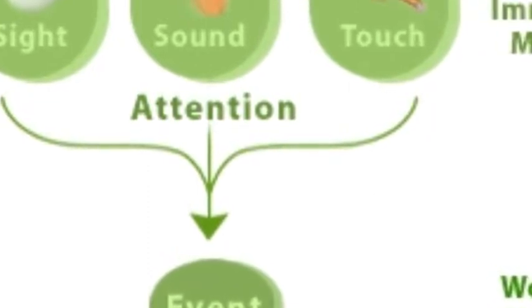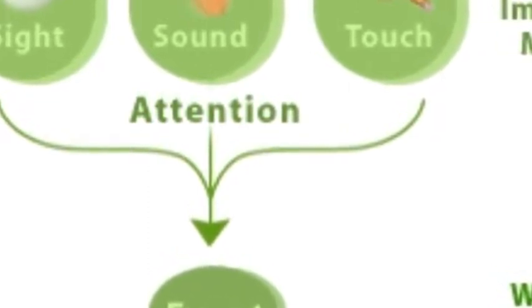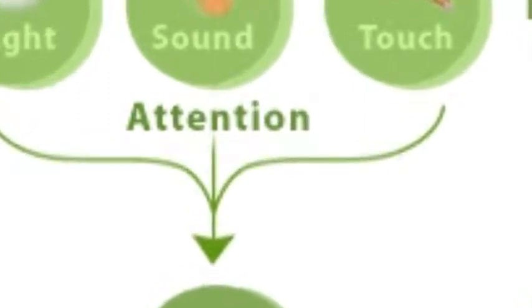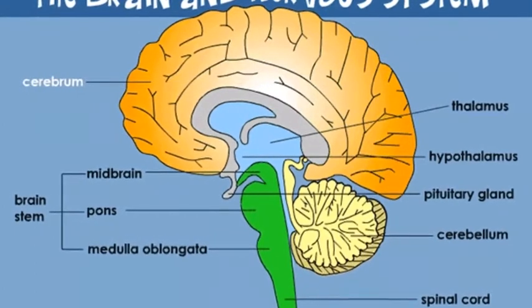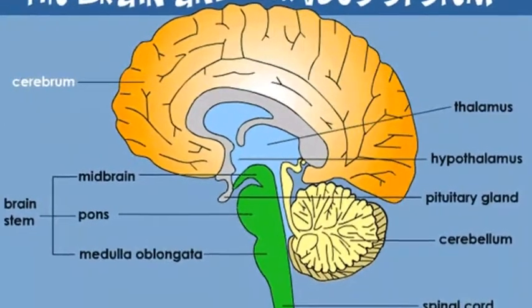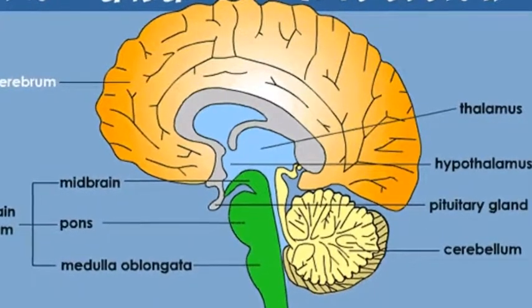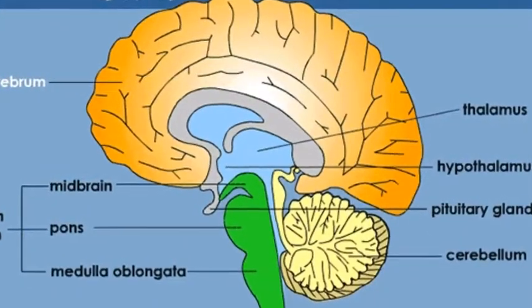Short-term memory has a very limited capacity. Scientists believe most people can retain information about roughly seven things for no more than 20-30 seconds in short-term memory. Of course, you can keep something in short-term memory by repeating it to yourself in order to keep resetting the clock for the short-term memory of that item.